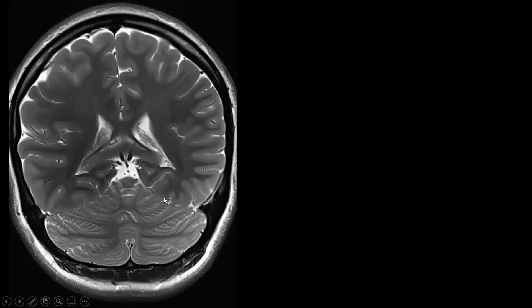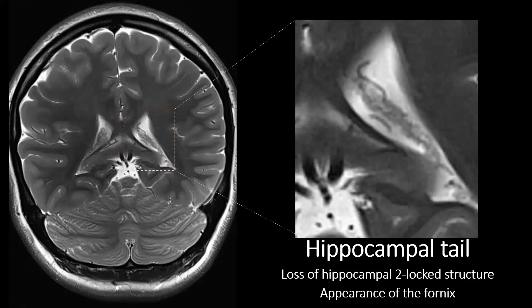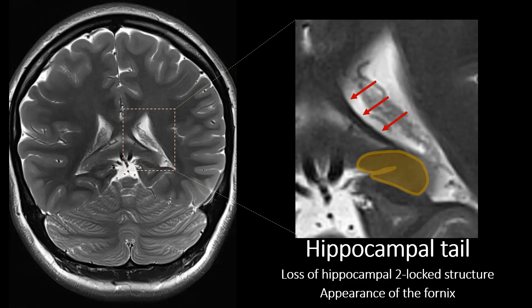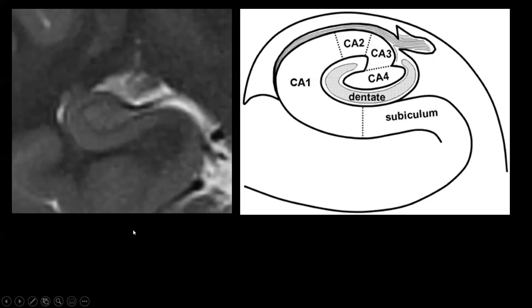Slicing a bit more posteriorly, we reach the level of the hippocampal tail. The hippocampal tail is a bit blurrier — we lose the normal anatomical distinction between the two cortical gray matter layers. At the hippocampal tail, we also see a white matter band appearing, which detaches from the hippocampal tail. This is the fornix — a white matter structure that connects the hippocampus with the mammillary bodies.